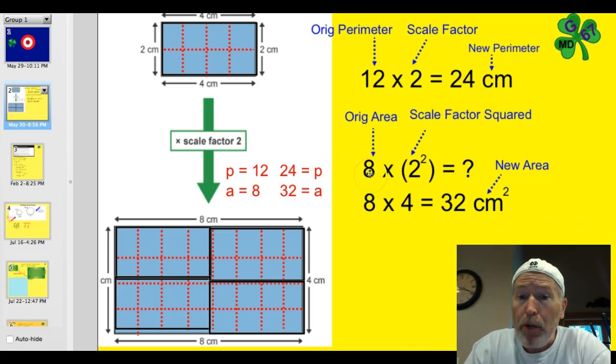You can take the original area, 8, and multiply it by the square of the scale factor. So the scale factor was 2, 2 squared. So then I'm going to simplify in this next step. 8 times 4. I have 32 centimeters squared. Interesting, huh?